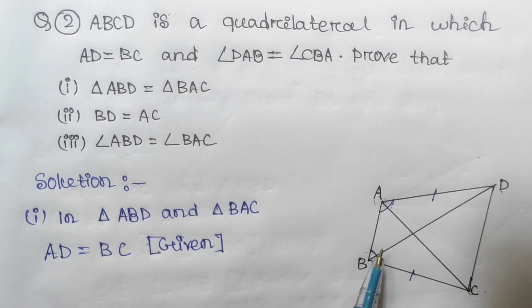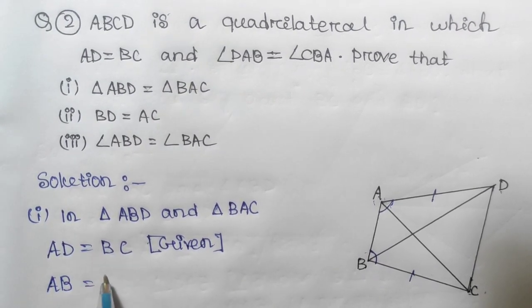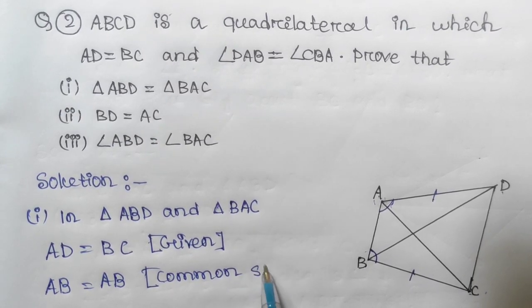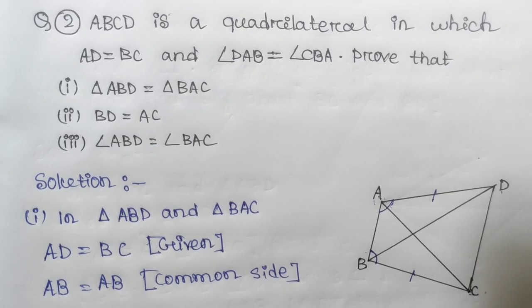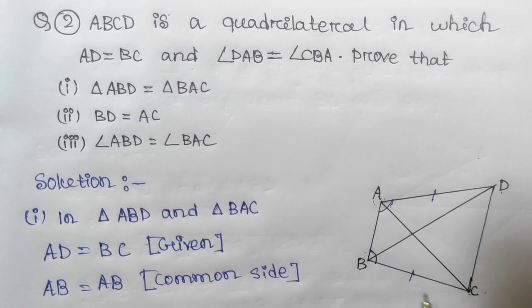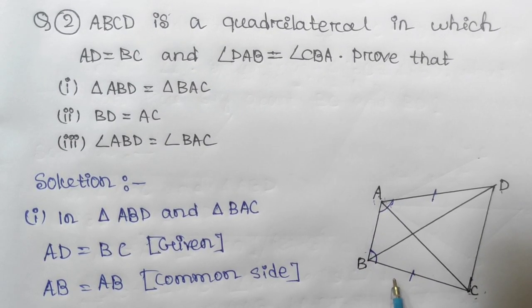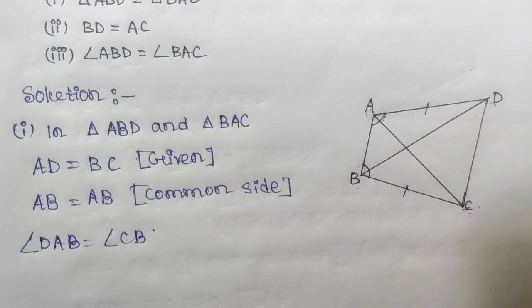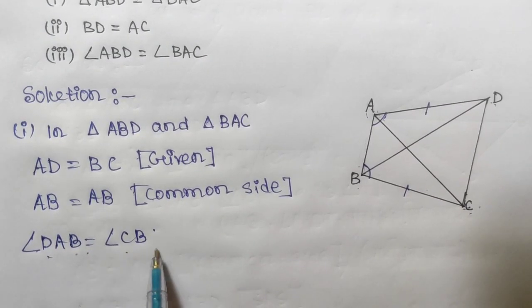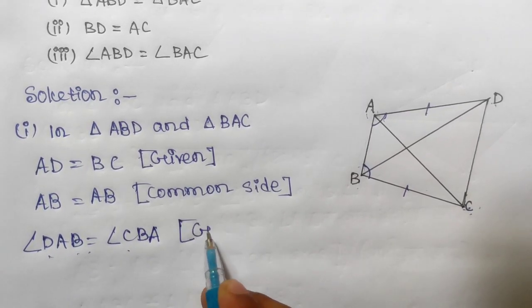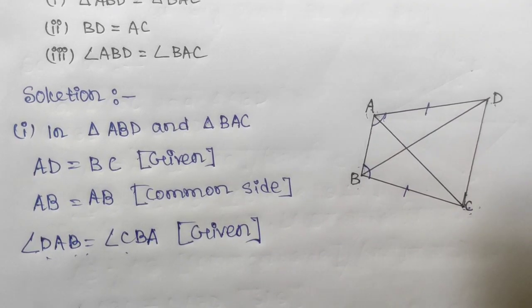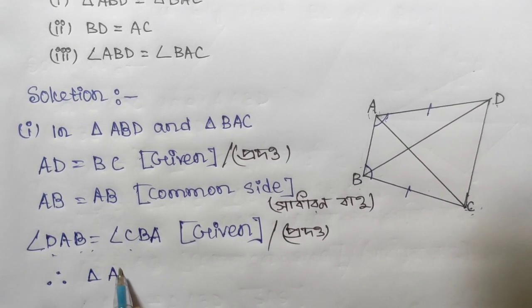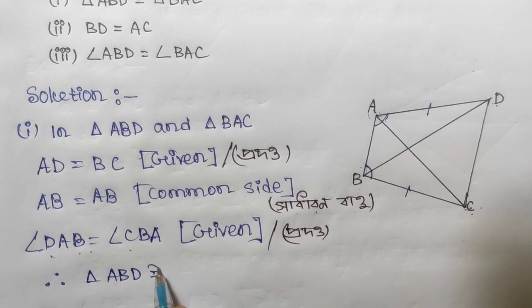Now look, in both triangles AB is a common side. In both triangles, AB is the common side. And angle DAB equals angle CBA, which is given. So triangle ABD is congruent to triangle BAC.